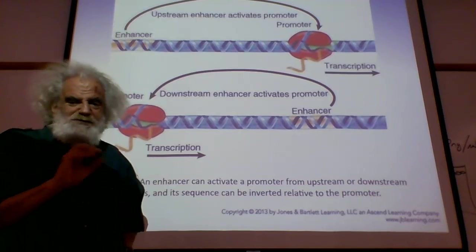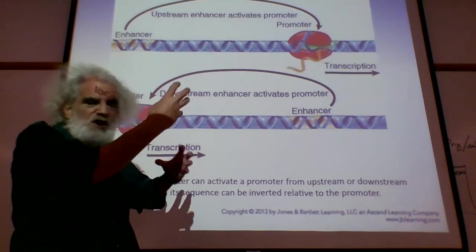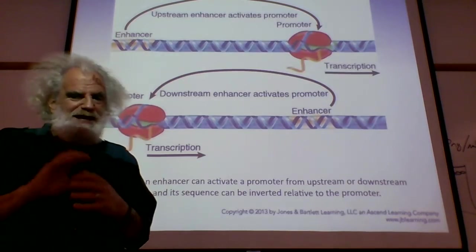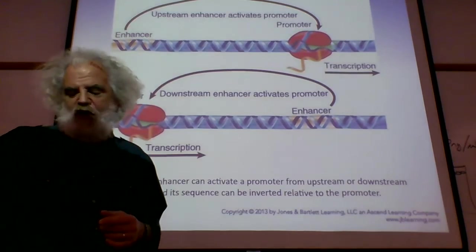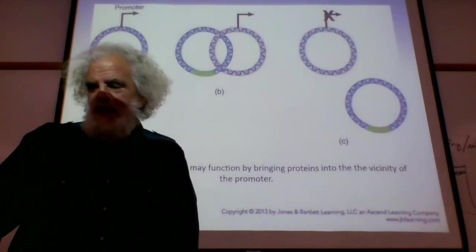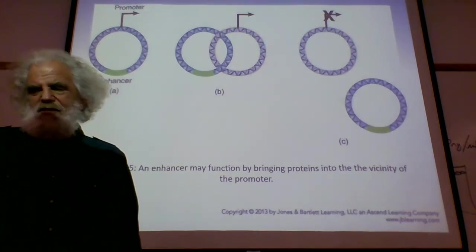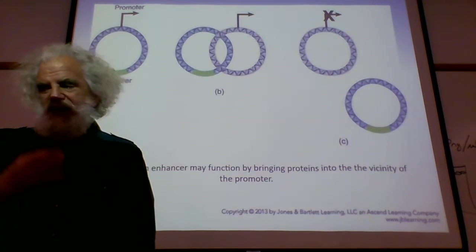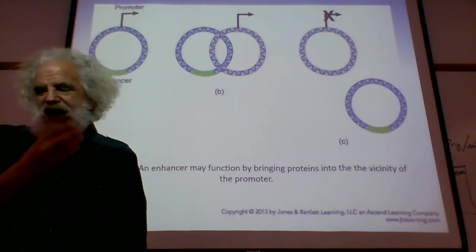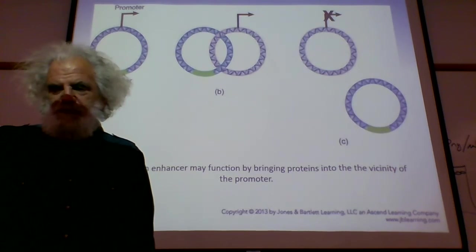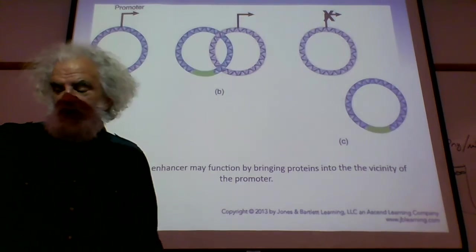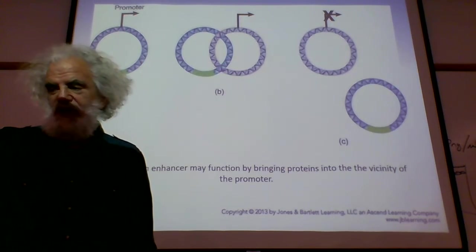So transcription factors that bind to enhancers are essentially folding the DNA up to allow for a happier nest for the RNA polymerase. And so there's been a number of different kinds of experiments done that demonstrate how in fact enhancers can bind—or once they have their binding proteins, they can interact with other parts of the DNA and kind of fold things up.